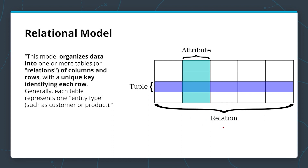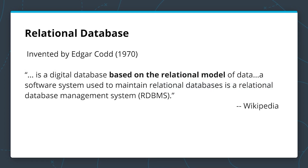At a very basic level, a table is a collection of rows and columns. A relational database is a digital database based on the relational model of data. The software system used to maintain relational databases is called a relational database management system, or RDBMS. The relational model and relational database were invented at IBM by Edgar Codd in the late 60s and early 70s.